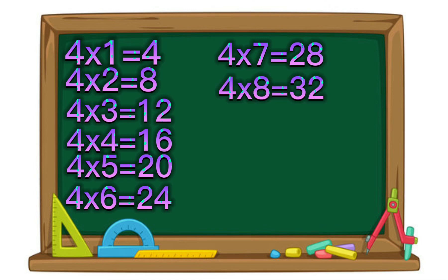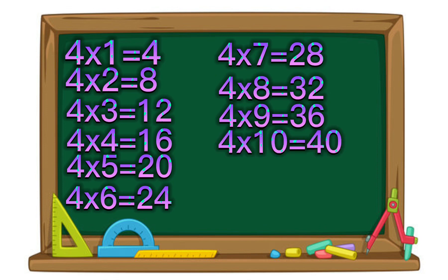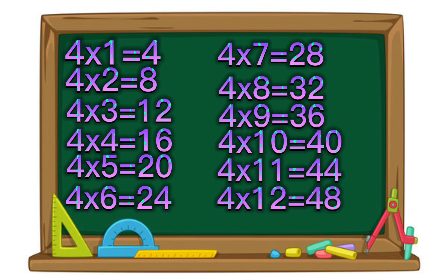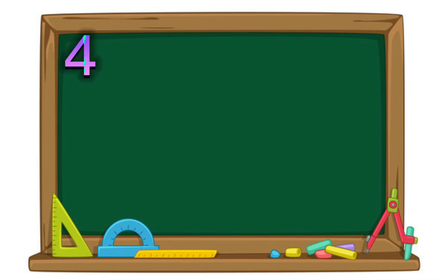4 times 8 equals 32. 4 times 9 equals 36. 4 times 10 equals 40. 4 times 11 equals 44. 4 times 12 equals 48.